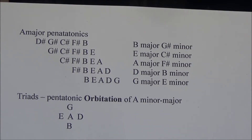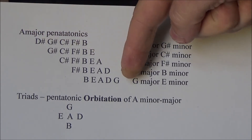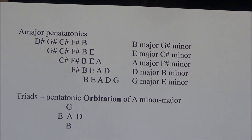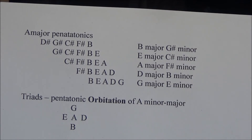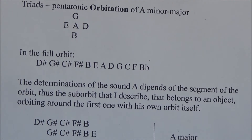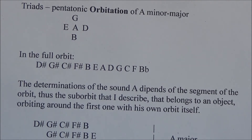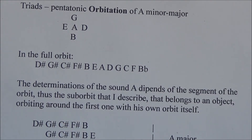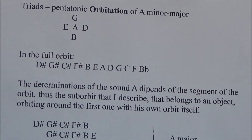If I consider the full quartal sequence I am working on, I need to consider the major — the minor starting from D going to G — and the minor from F sharp to B flat. So I obtain a longer quartal sequence starting from D sharp to B flat. The determination of the sound A depends on the segment of the whole orbit. I have every tone here, and the determination of the sound comes from the segment of this full quartal orbit that I choose.